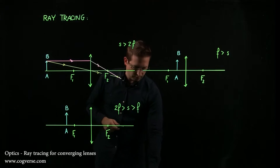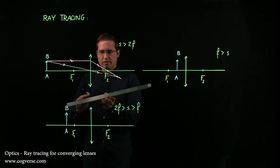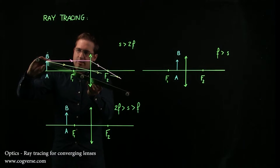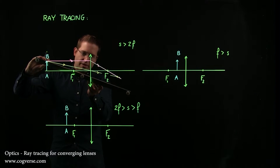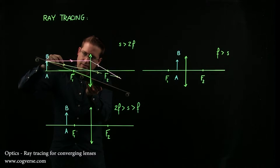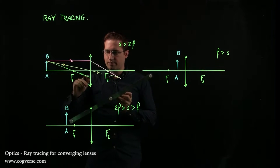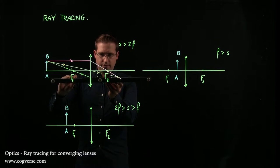There's a last rule, and we'll just go over that one before we draw the position of the image. That one says that any ray of light that comes in through f1, like this, comes out parallel to the axis.